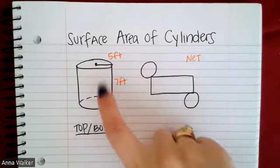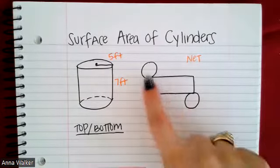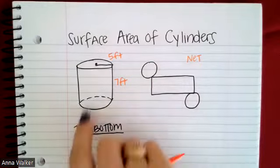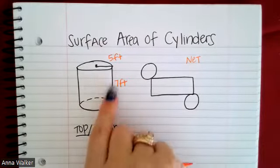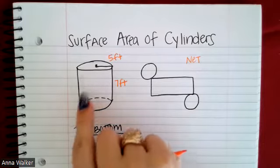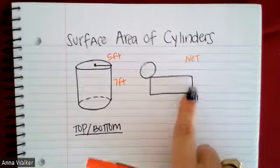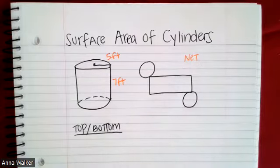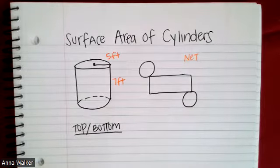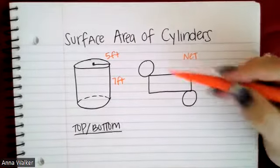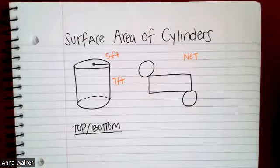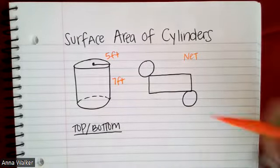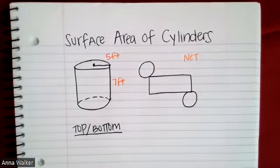We have our top and bottom circles — we can think of them as the floor and ceiling. The lateral area of a cylinder, what we call the side, is actually going to be a rectangle. If you think about peeling off the label on a Pringles can or a water bottle and flattening it — it's going to be a rectangle. We'll find the area of the two circles and the rectangle, then add them all together like a composite figure.